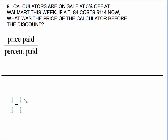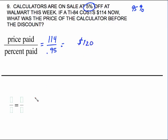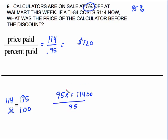Similar problem — using price paid over percent paid. Calculators are on sale at 5% off. If it's 5% off, you did not pay 5%, but you did pay 95%. The price paid is $114.00, and the percent paid is 0.95. Type that into the calculator and it comes out to $120.00. For the proportion way: the 100% full price is X, you paid 95% which was $114.00. Cross-multiply: 95X equals 114 times 100. Divide both sides by 95 and you get the same price.